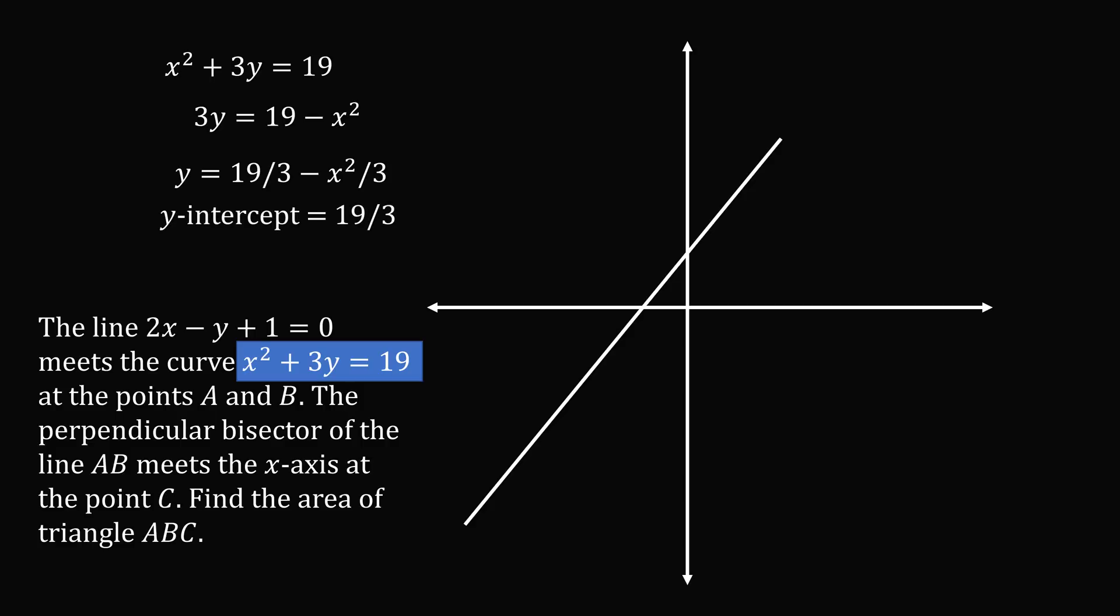It will have a y-intercept that's equal to 19 over 3. And since the coefficient on x squared is negative 1 over 3, we know this parabola will point downward. So we're going to have a maximum value at 19 over 3, and then we'll draw a parabola that points downward in both directions. So it will look something like this.